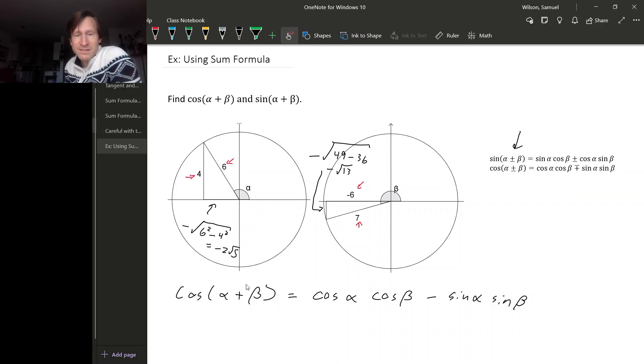And now that we know all these sides, we can write down what each of these is. So cos(α), up in our α diagram, that's adjacent over hypotenuse, so -2√5/6. cos(β) is -6/7. sin(α) is 4/6, so that's 2/3.